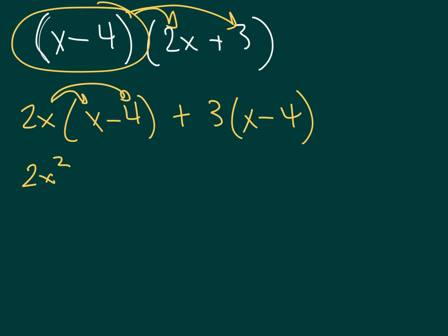So we have 2x squared minus 8x plus 3x minus 12.